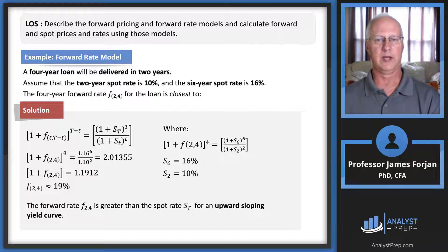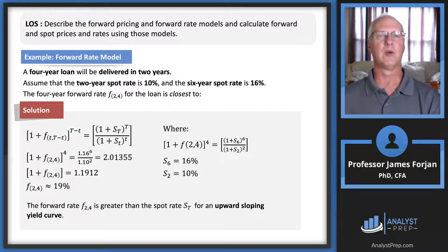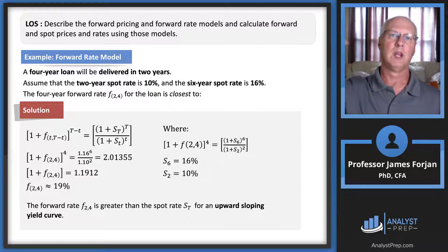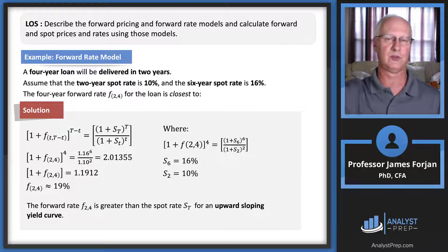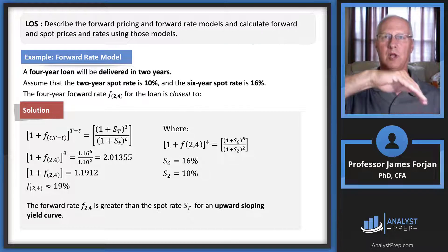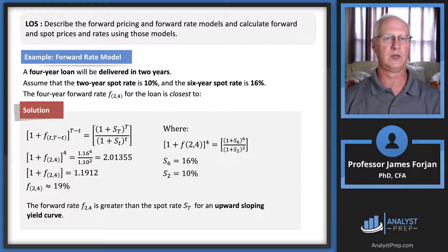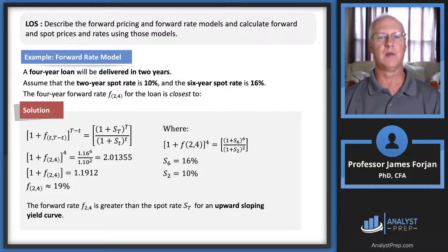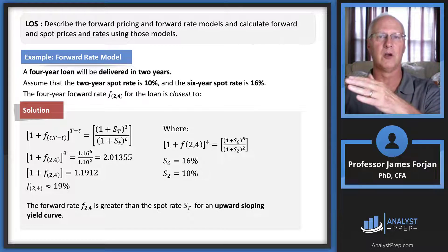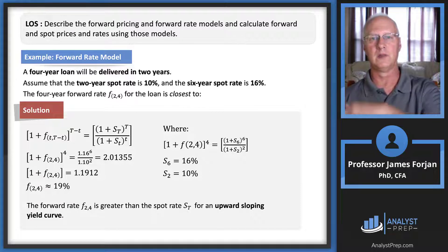Notice that the forward rate is greater than the spot rate, and that will always be true when the spot curve is upward sloping. Think of it this way: the spot curve measures average spot rates over a time period, while the forward curve represents marginal changes over each future time period. So the forward curve lies above the spot curve when the spot curve is upward sloping, and below it when the spot curve is downward sloping.